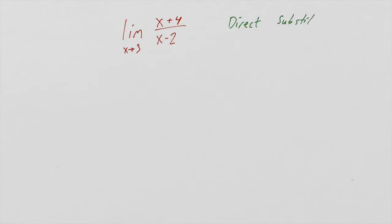And this is exactly what it sounds like. We're just going to substitute in 3 for x and see if we can get a number. Now if we can't get a number, we've got to do something else or the limit might not exist. But let's give it a shot here.